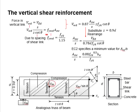The design strength of the shear link is a function of Fyk divided by the partial factor of safety of the steel, which is equal to 1.15.